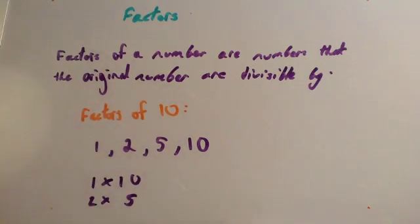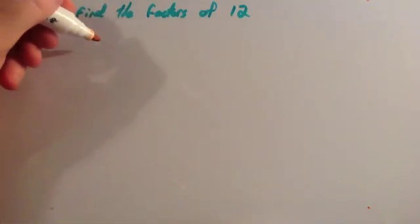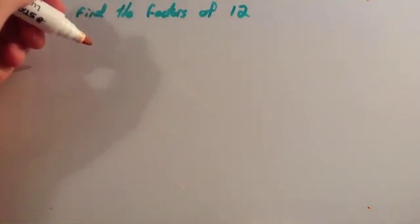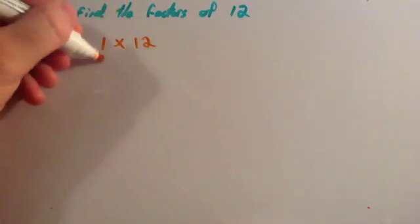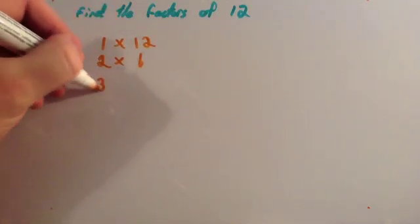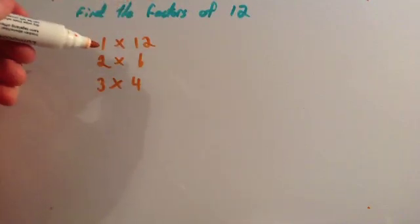So let's look at some examples. The question says find the factors of 12. So the factors of 12, well let's think of what multiplies together to give you 12. Well 1 times 12 is 12, 2 times 6 is 12, and 3 times 4 is 12. So the factors of 12 are 1,